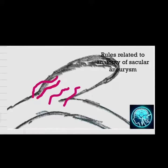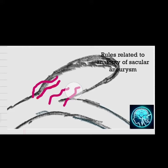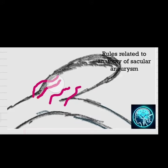A fourth rule was later introduced, stating that there is a constant set of perforating arteries situated at each aneurysmal neck that need to be protected.